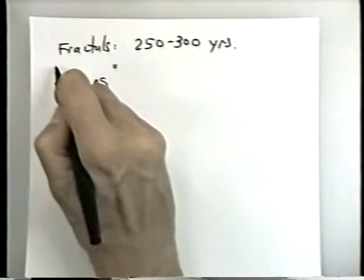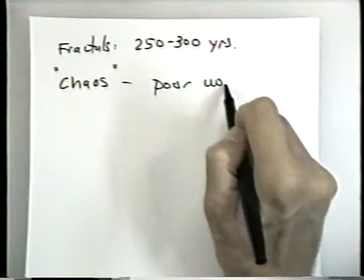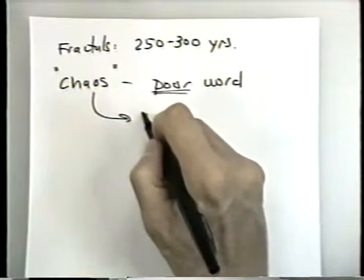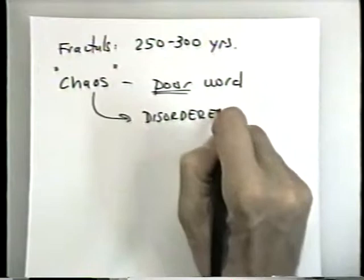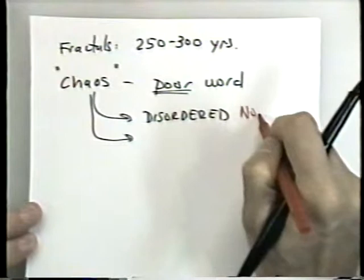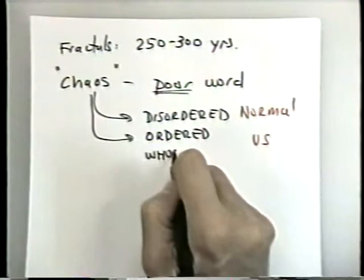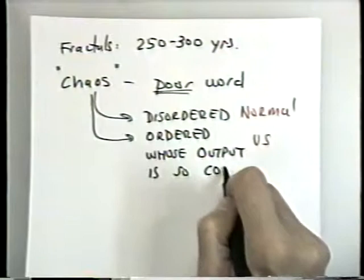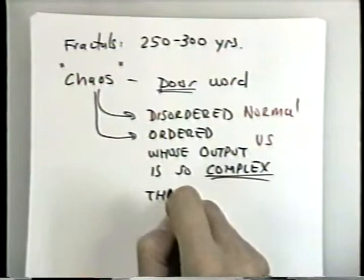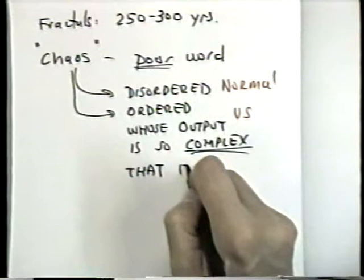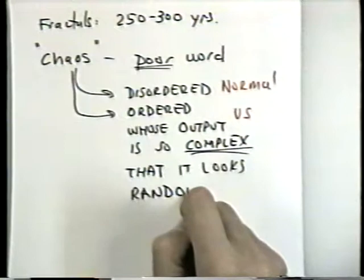Chaos is a bad word in the sense that in normal usage it means disordered. But for us, chaos will mean a highly ordered system whose output is so complex that it looks random. That's the definition of chaos. These ideas of chaos are more recent than fractals — going back to maybe 100 years ago, to Henri Poincaré.